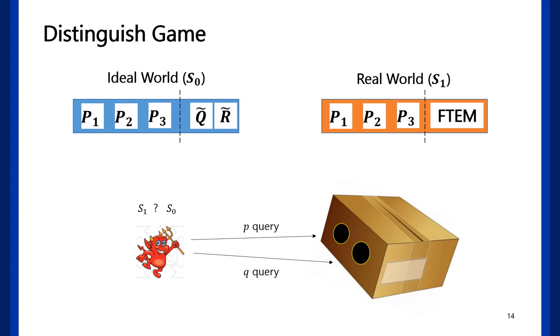Then, for a forked tweakable block cipher, what is its ideal symmetric construction? We made it as two concatenated tweakable permutations. It means if you make construction query to ideal world oracle, the oracle returns two outputs of different tweakable permutations, tilde Q and tilde R.